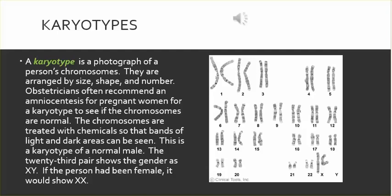Karyotypes. A karyotype is a photograph of a person's chromosomes, arranged by size, shape, and number. Obstetricians often recommend an amniocentesis for pregnant women to obtain a karyotype to see if the chromosomes are normal. The chromosomes are treated with chemicals so that bands of light and dark areas can be seen. This is a karyotype of a normal male — the 23rd pair shows the gender as XY. If the person had been female, it would show XX.